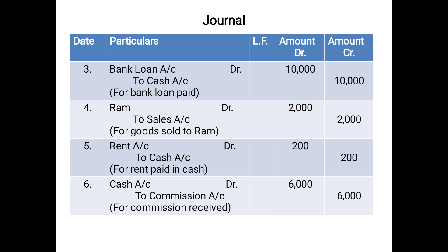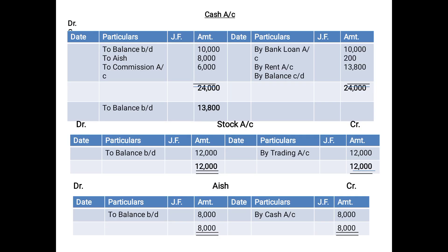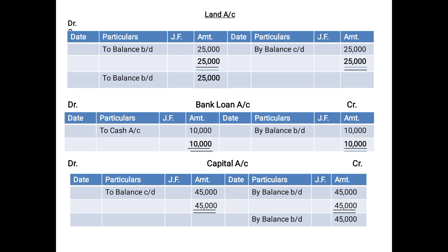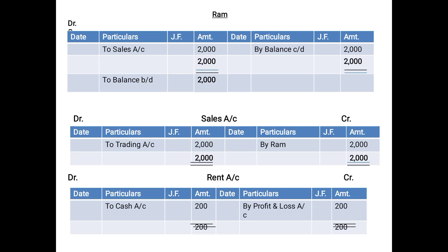The next entry is Rent Account debited, To Cash Account. Cash Account is already prepared, so when posting in Cash Account, you record the rent aspect. Rent is being debited in the entry, so it will be posted on the credit side of Cash Account as 'By Rent Account 200'. In the Rent Account, you record the cash aspect — cash is being credited — so it will be recorded on the debit side of Rent Account as 'To Cash Account 200'.